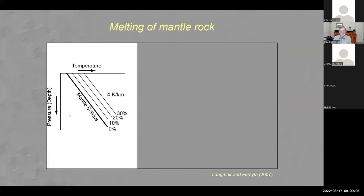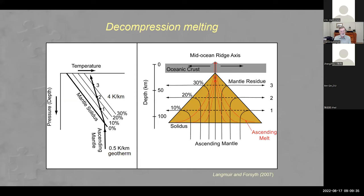From a petrological point of view, melting is a function of pressure and temperature. As you come up from depth, you cross the mantle solidus and melting begins. The amount of melt depends on how far you are across the solidus. The mantle geotherm rises at about half a degree per kilometer, and the melting region has a slope of about four degrees per kilometer, so the geotherm intersects the various melting curves, producing mantle melt extracted at the mid-ocean ridge.